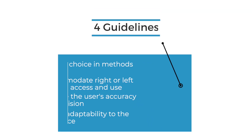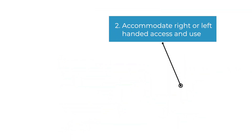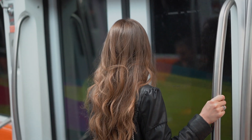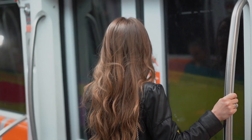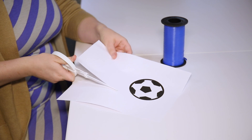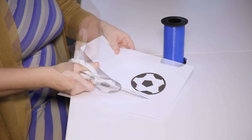Second, accommodate right- or left-handed access and use. This includes examples such as handrails on both the left and right side, as well as scissors that can be used by both hands.